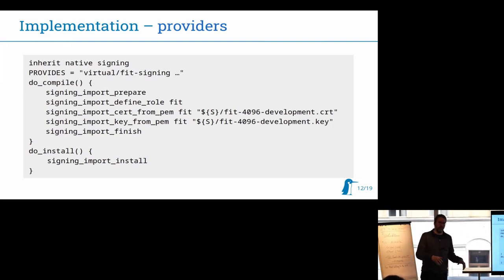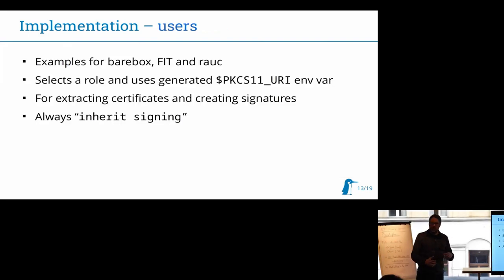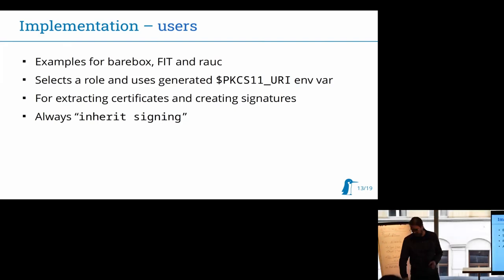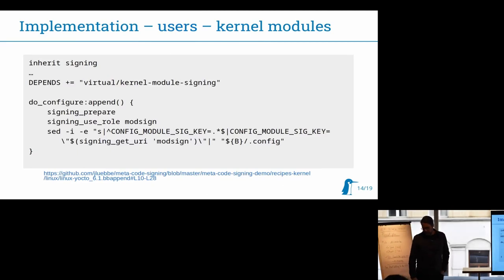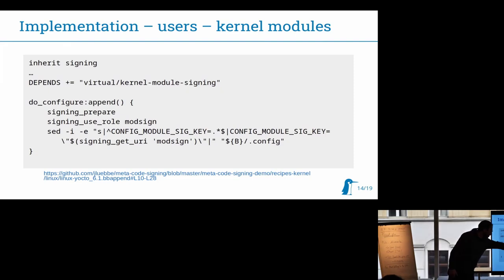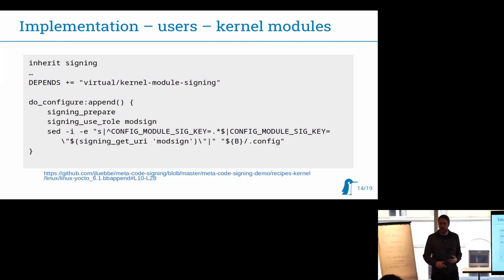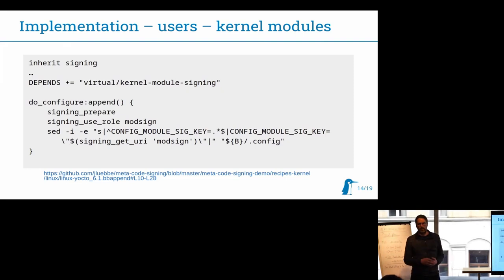In the demo there's a set of keys which are already imported, but you can easily generate your own keys and import them in different recipes. At that point you have your set of development keys and could override them in local.conf with PKCS11 URLs. For a recipe, I select a role — like bootloader, kernel, RAUC, or whatever — and get the URI which I need to pass into the project-specific build system. For kernel modules it's pretty simple: I set a Kconfig variable with this URI, which is extracted from the signing BB class information loaded from the native package. It either uses SoftHSM with a development key or the actual key during release builds.